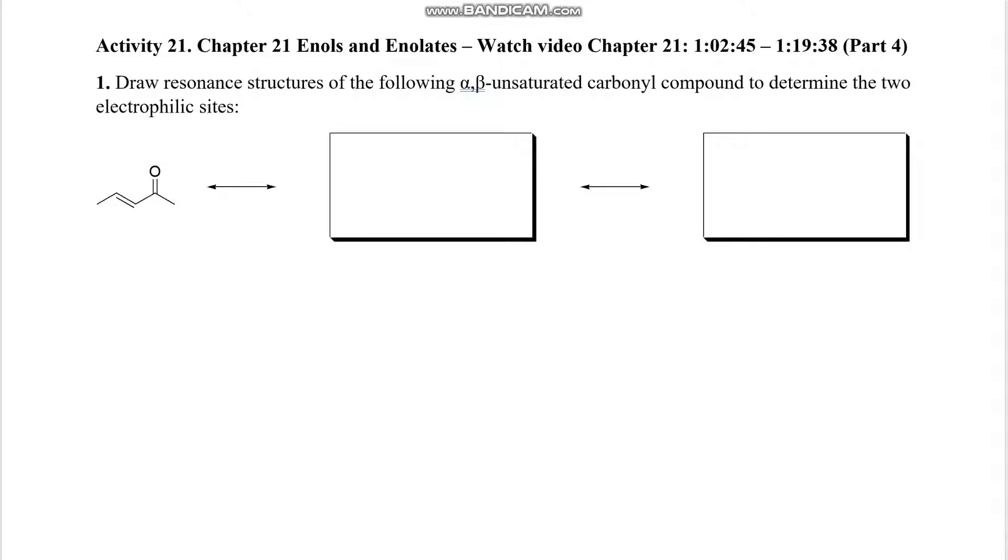This is activity 21 on enols and enolates. We will be talking about 1-2 additions, 1-4 additions, Michael additions, and Stork reactions.